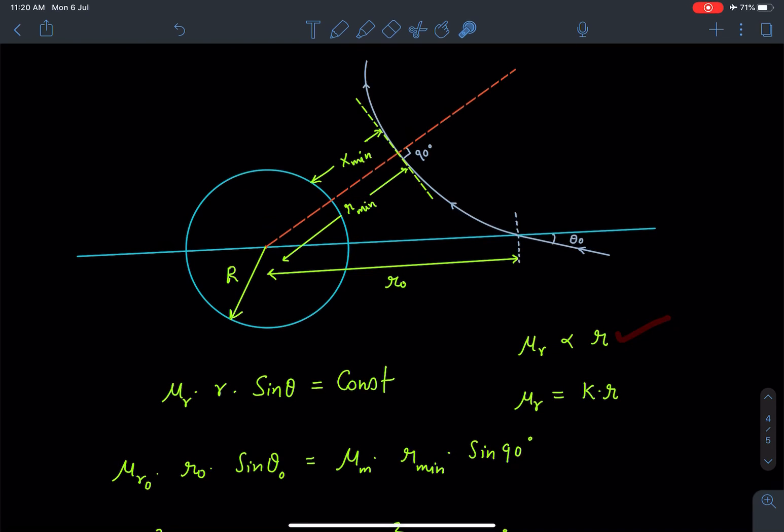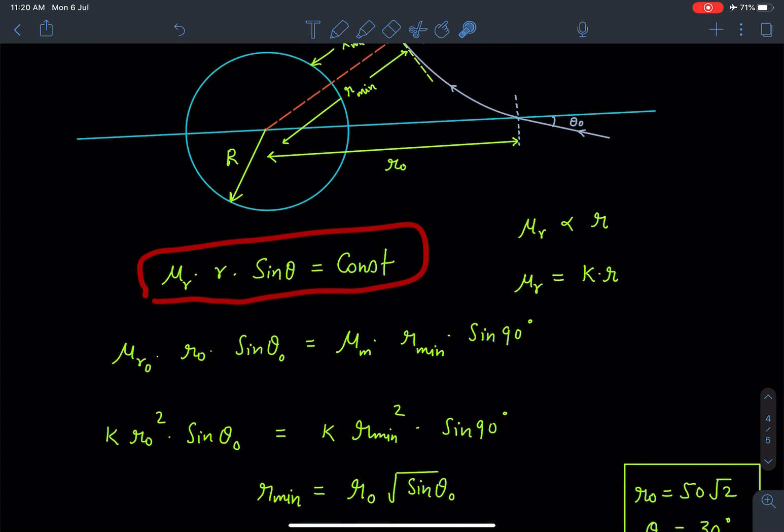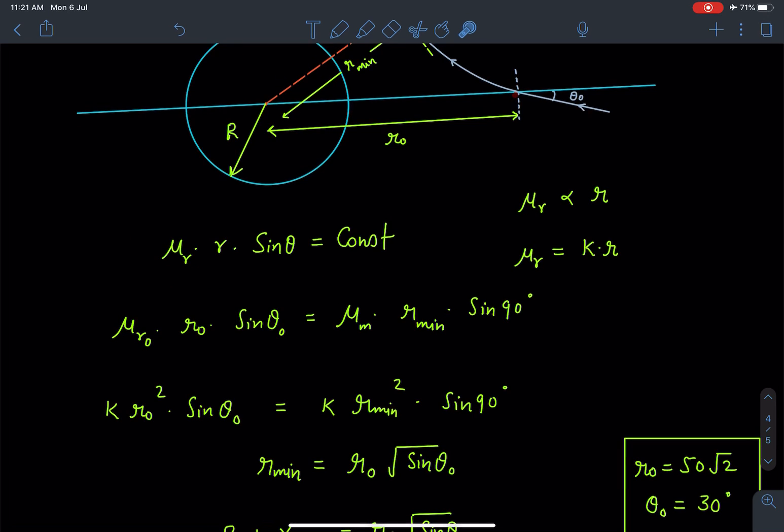I'm using a proportionality constant K, so I'll substitute the refractive index at radius r as K times r. Now applying Snell's law for radial variation, I can easily write for point r₀: μ(r₀) times r₀ times sin θ₀ equals μ at r_min times r_min times sin 90°.